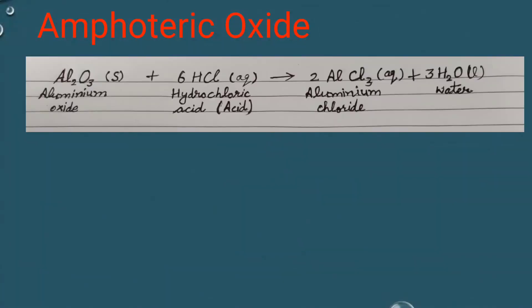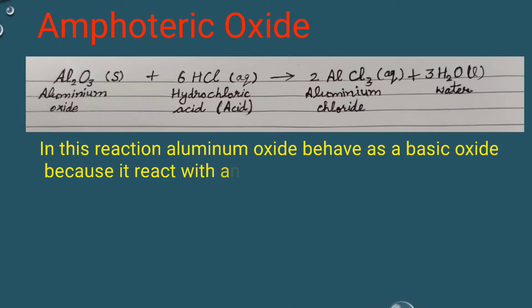In this reaction, aluminium oxide behaves as a basic oxide because it reacts with an acid to form salt and water.